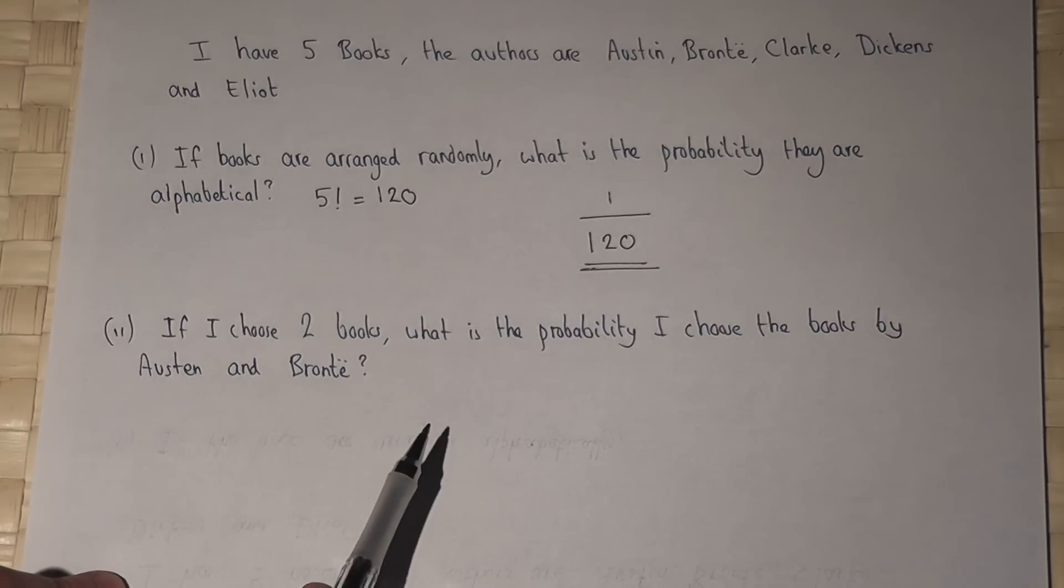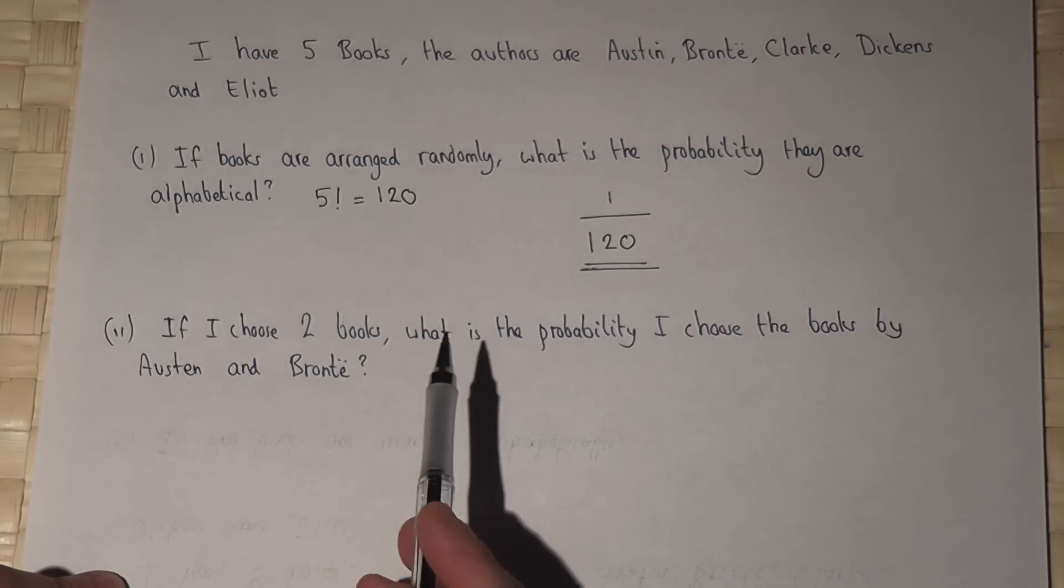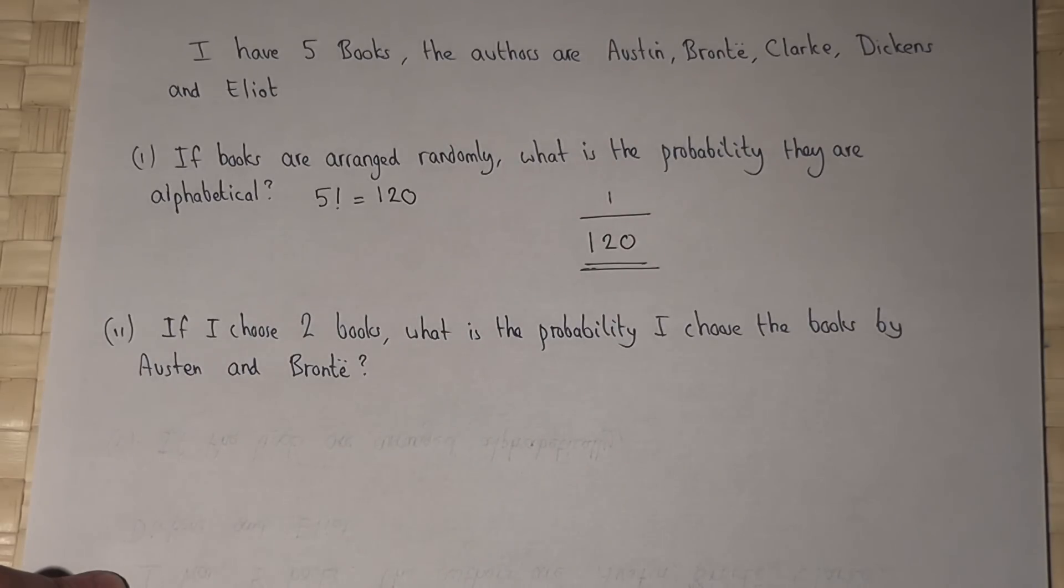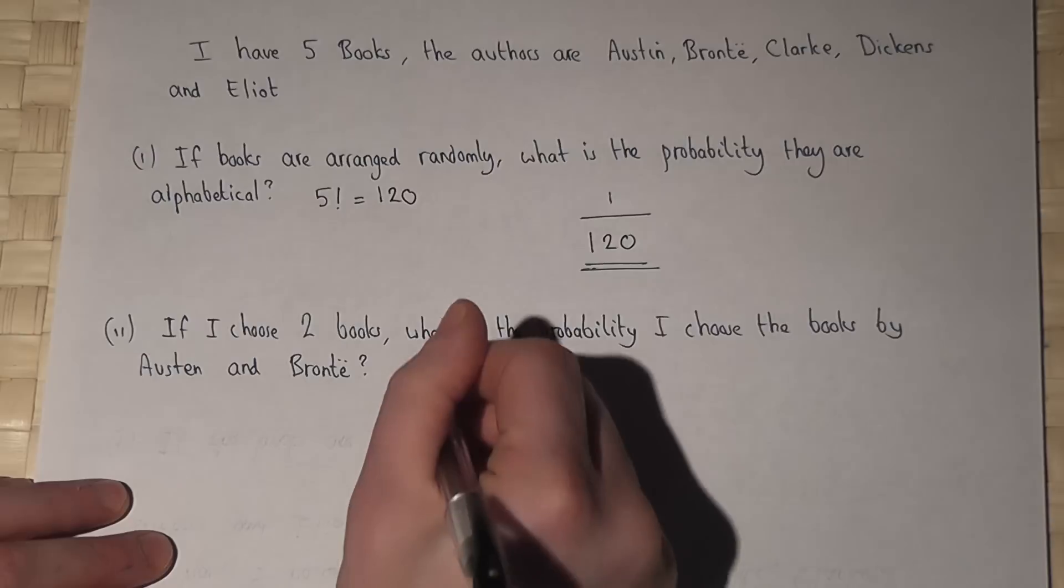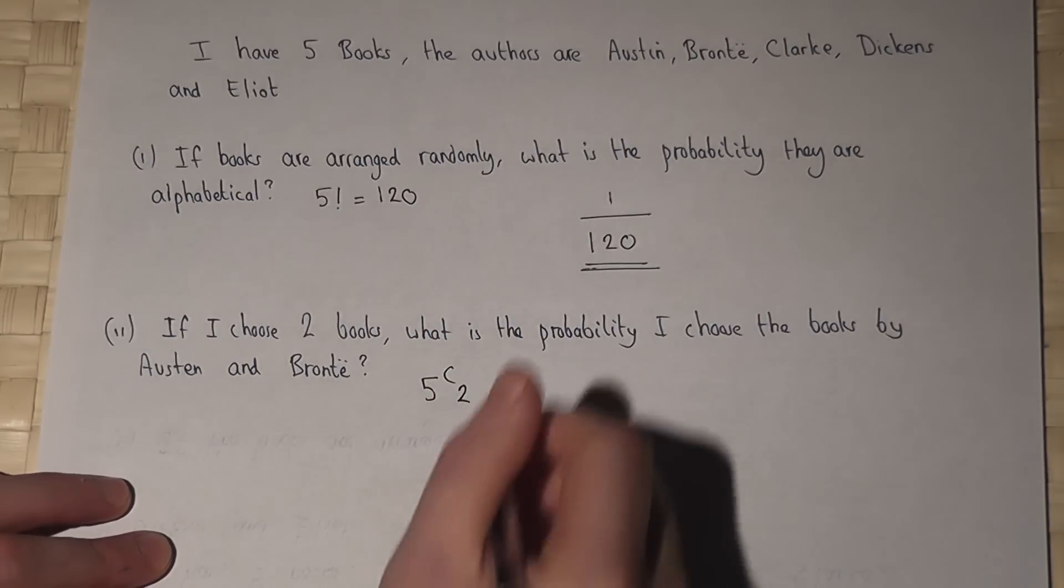In part two we're asked, if I choose two books, what is the chance that I choose the books by Austin and Bronte? There are five C two ways of choosing two books.